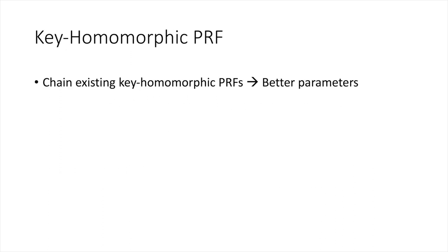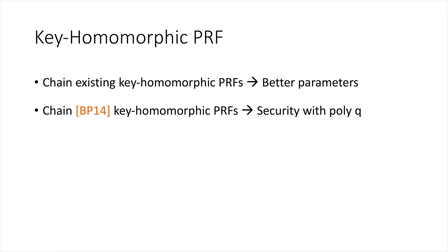Let me briefly comment on our second PRF construction. We achieve our keyhomomorphic PRF by applying the chaining technique on top of existing keyhomomorphic PRFs. Chaining existing keyhomomorphic PRFs allows us to prove their security with much better parameter settings. In particular, chaining the keyhomomorphic PRF of Banerjee and Peikert from 2014 gives us a keyhomomorphic PRF whose security can be based entirely on LWRE with a polynomial-size modulus q.